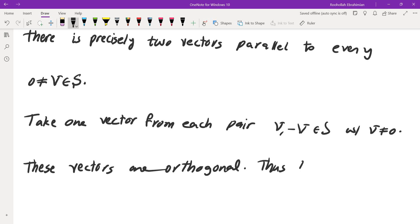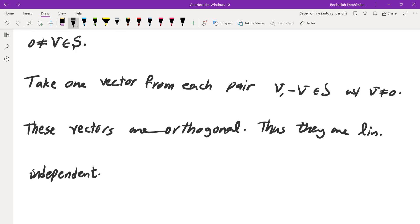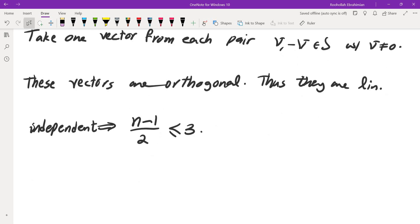Okay, so that means they can't be more than three of them. But what we have is there are N vectors in the set. We discard zero. We divide by two because from every pair V and negative V, we chose only one of them. So that cannot exceed three.